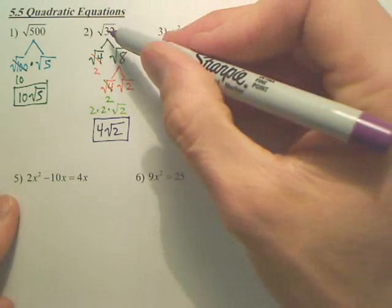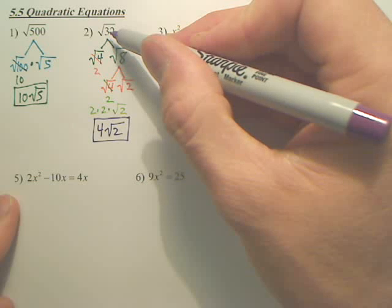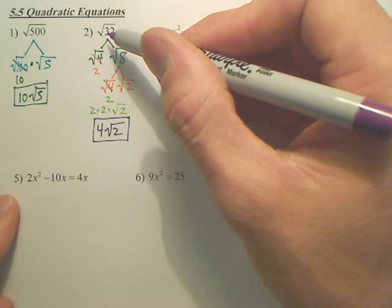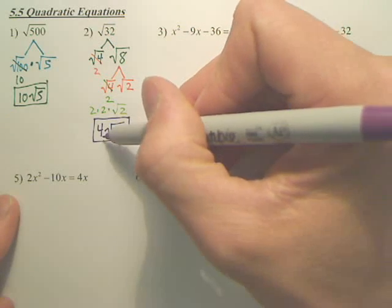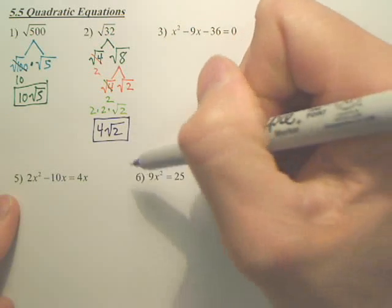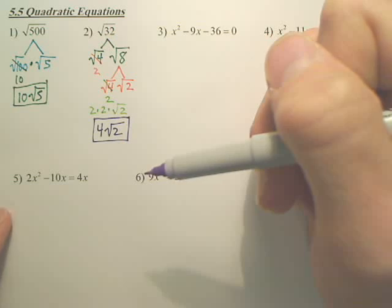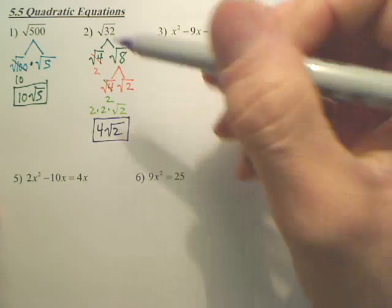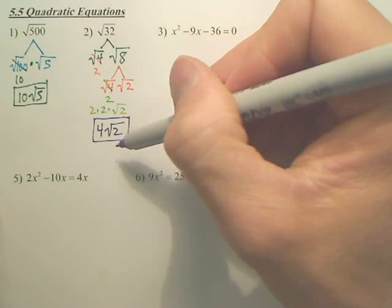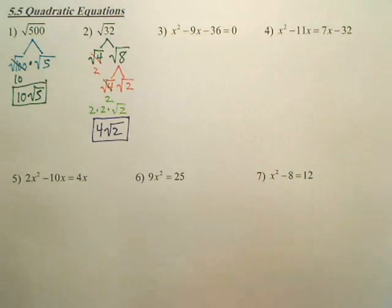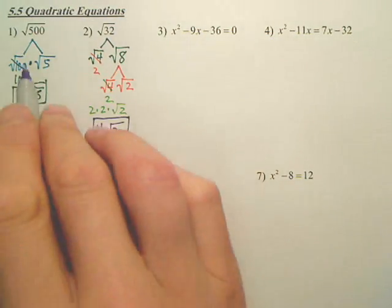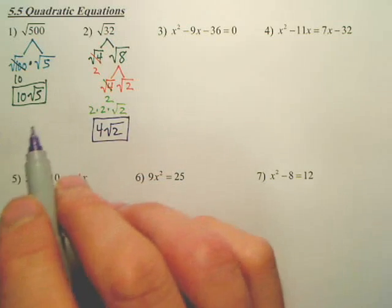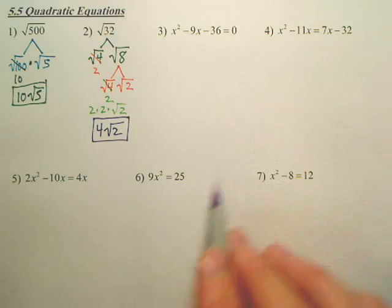By the way, did anybody notice 32 is square root 16 times 2? 32 is 16 times 2. And what's the square root of 16? Four. You could have spotted the 16 right off the bat and jumped straight to this. But for some people, they have to do it multiple steps. This is simplifying square roots. You have to deal with this within some of these problems down here.